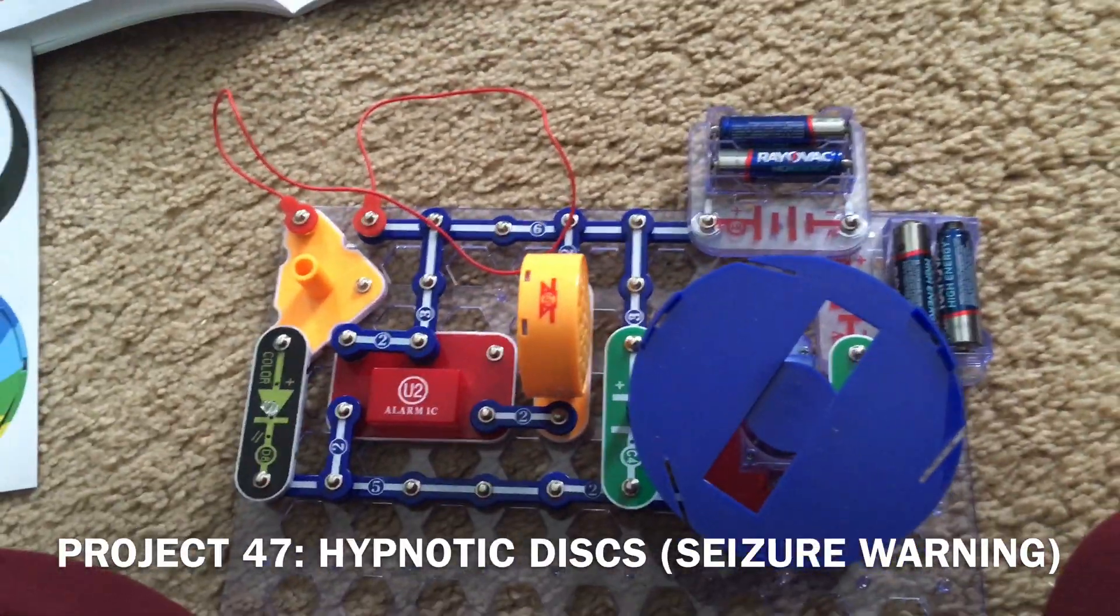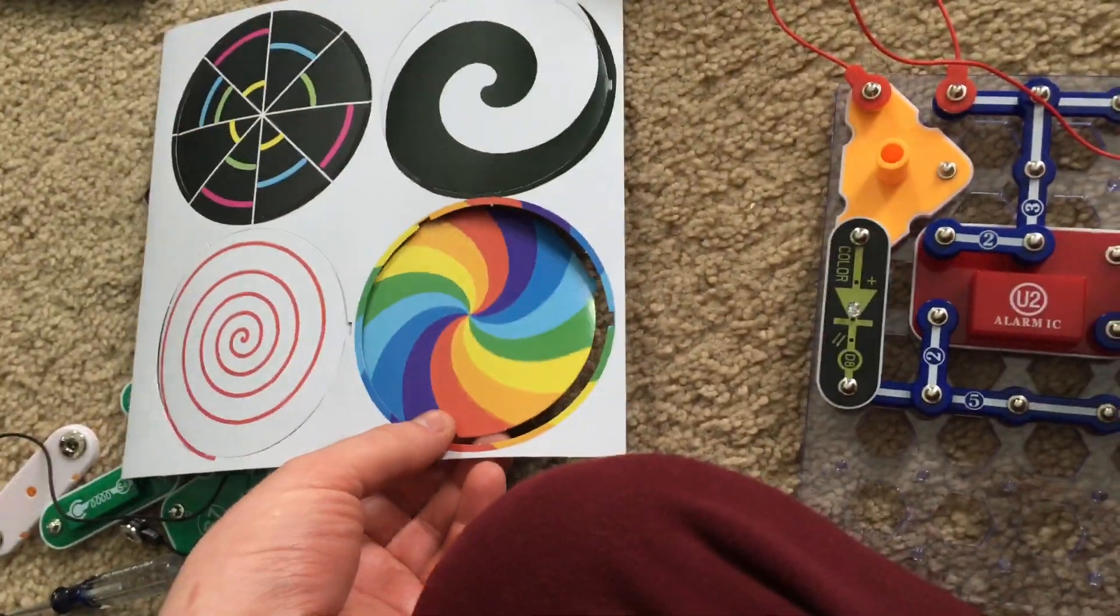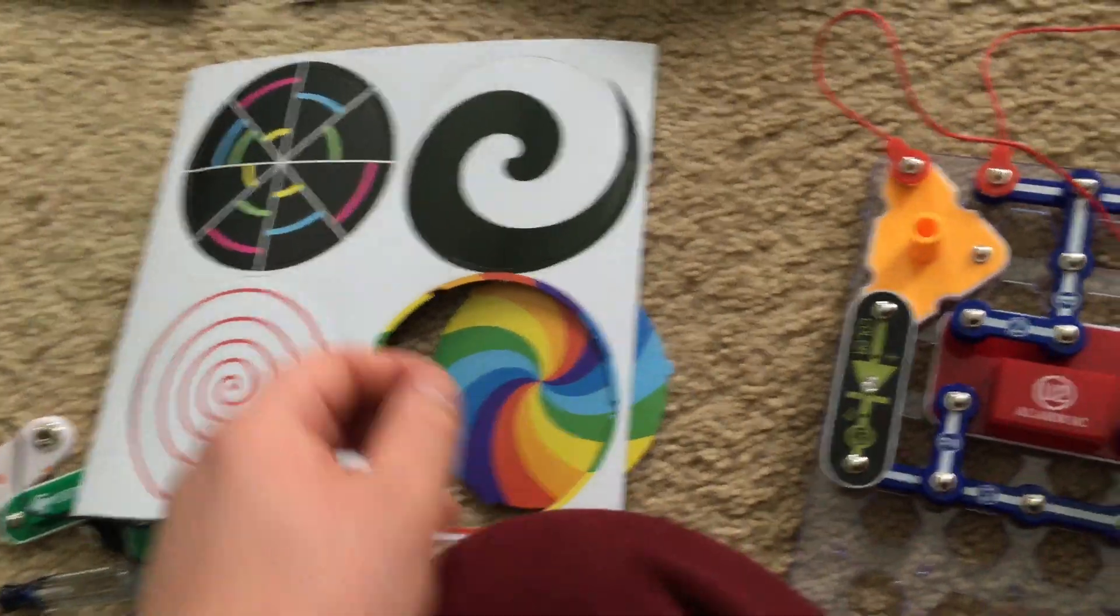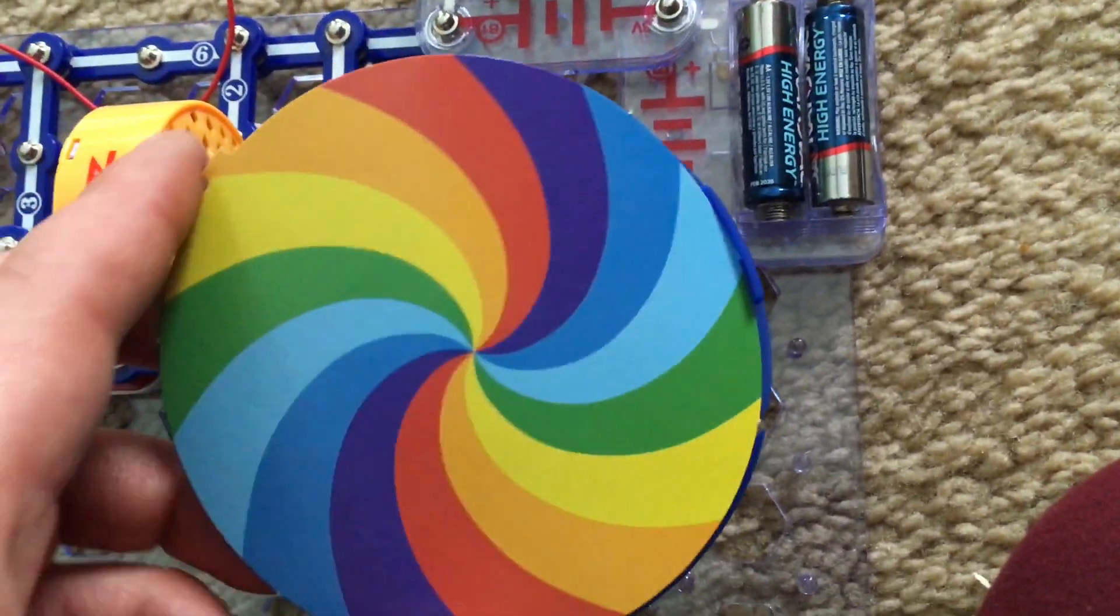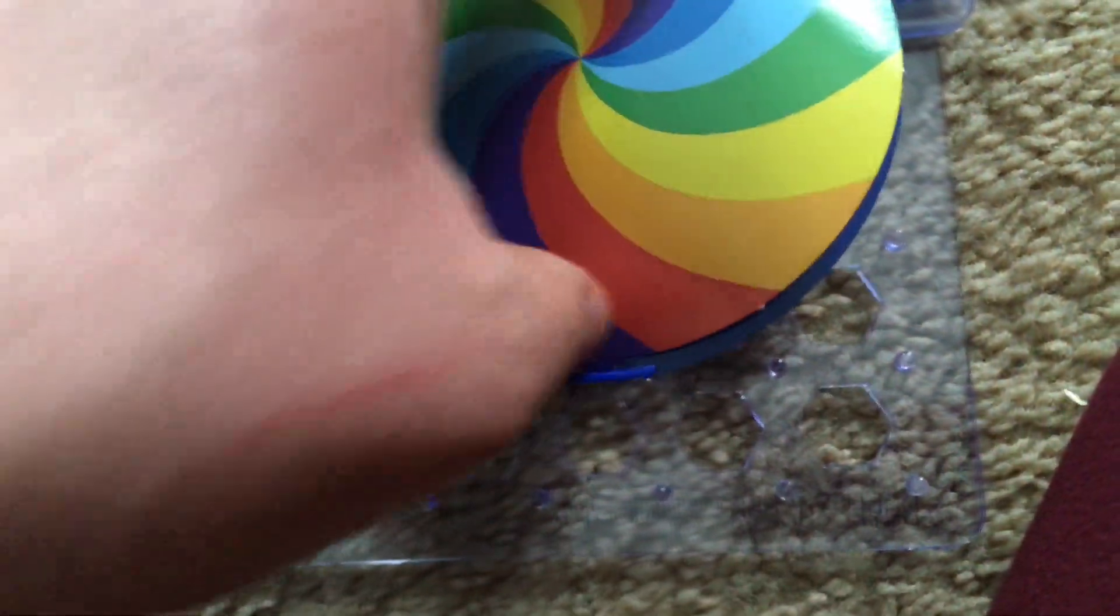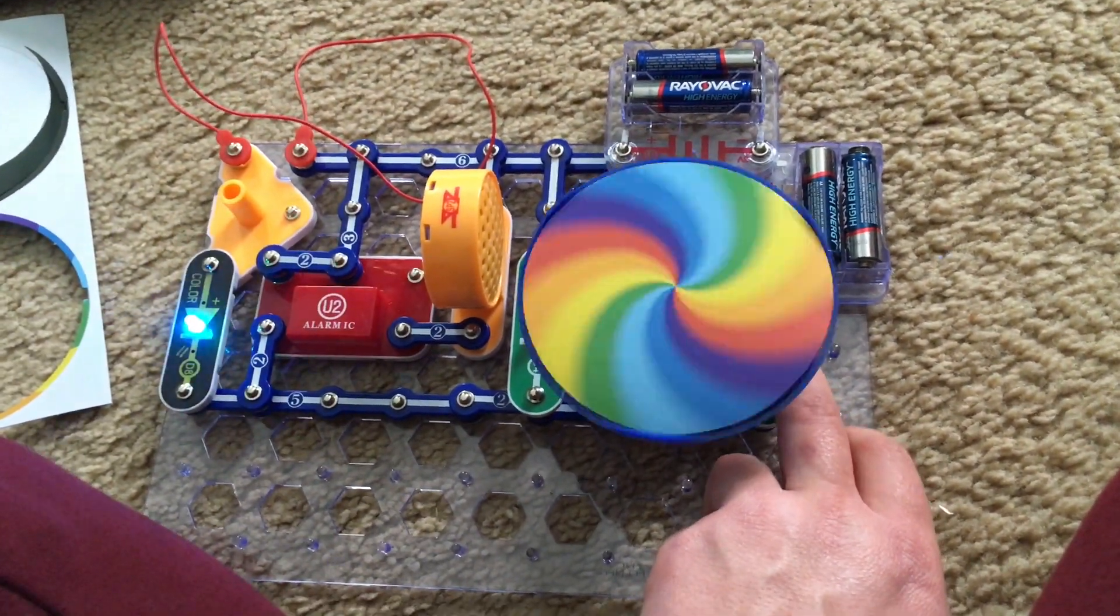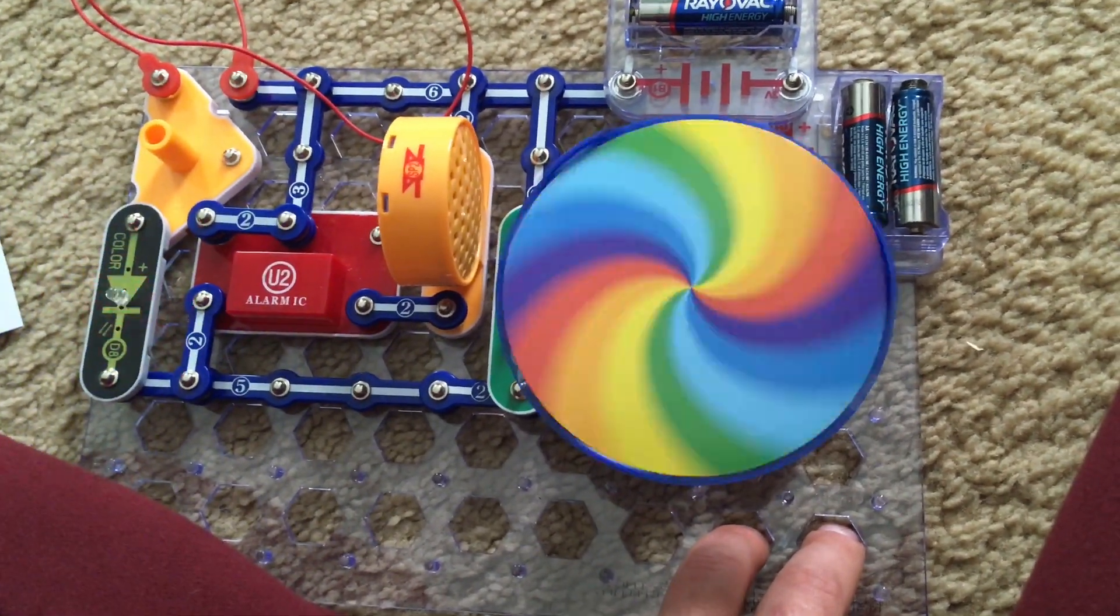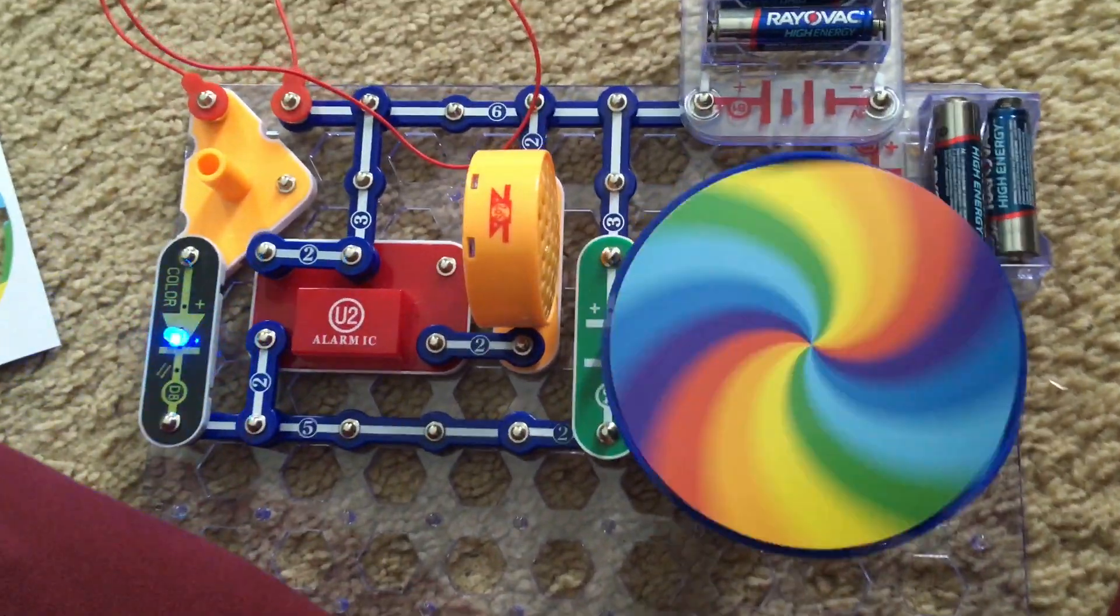For project 47, it's pretty interesting. You will put one of the hypnotic discs on the merry-go-round. And I'm going to demonstrate the project with all four of them, but I'm going to start with this rainbow. You would just make sure that the tabs on the disc go in the small grooves there. And then, once the disc is secure, you'll turn on the slide switch and observe the pattern produced as the disc spins on the merry-go-round. You may notice that some of the colors on it disappear at times.